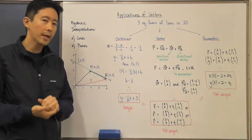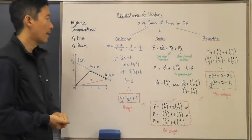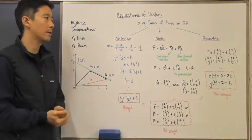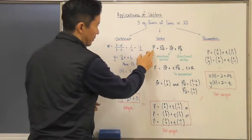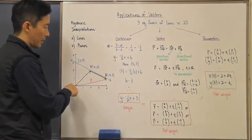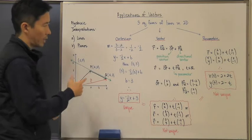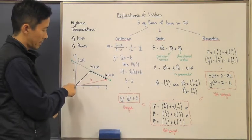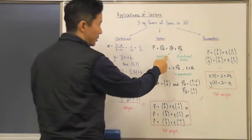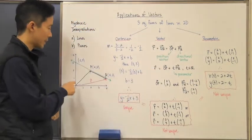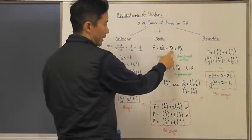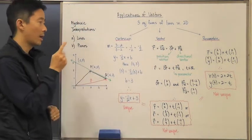Now we want to investigate the vector interpretation of this line. The key equation here involves a resultant vector from O to Q, which is the same as going from O to P and then from P to Q. I'm going to call O to P the position vector — it takes me from the origin to a point that is on the line.